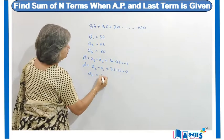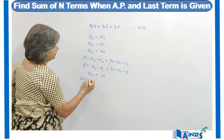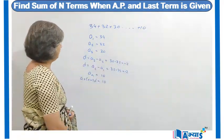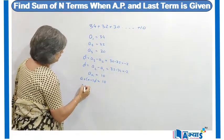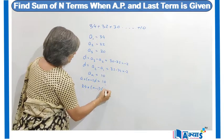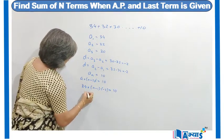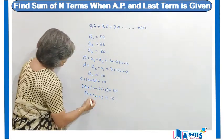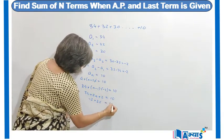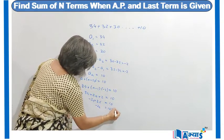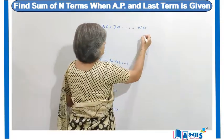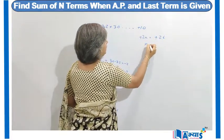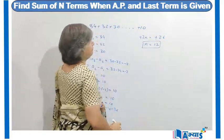That means An = 10, or we can say A + (n−1) × D = 10. Substituting the values: 34 + (n−1) × (−2) = 10, which gives −2n = 10 − 36, so −2n = −26. The negatives cancel and n = 13. Now we know the value of n.